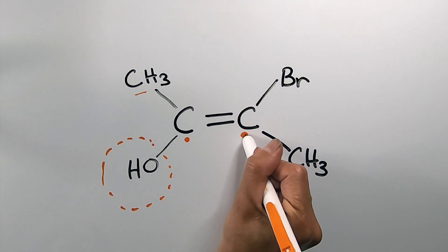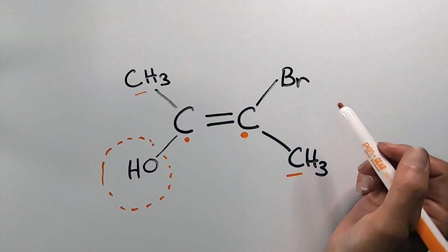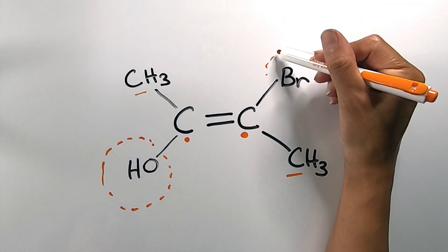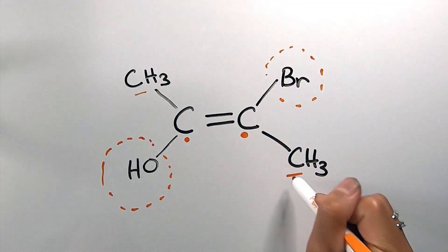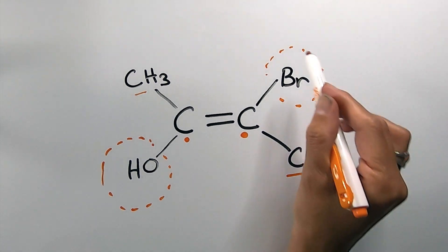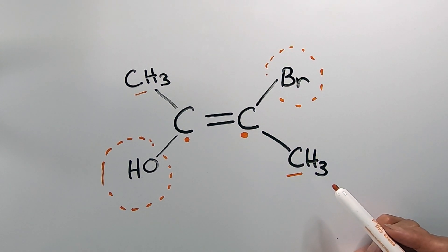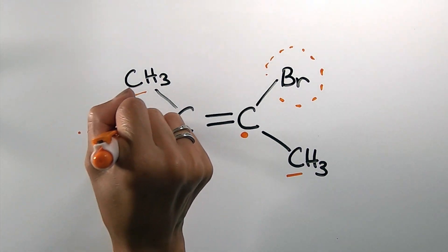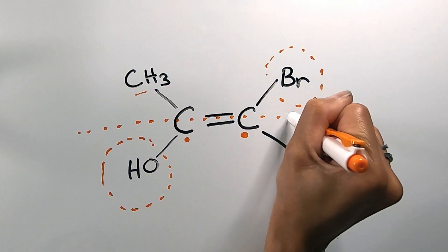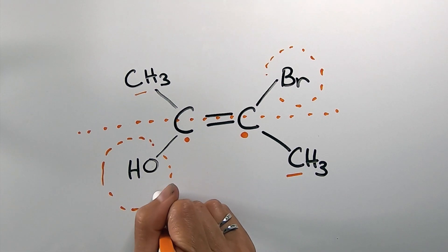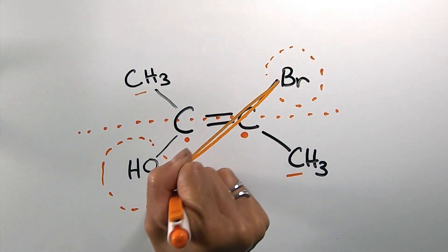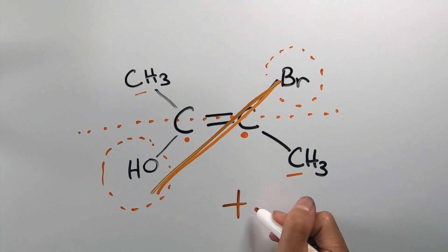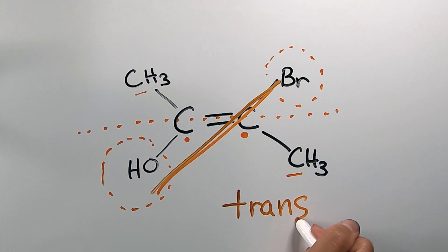Then I look at the second double-bonded carbon and determine priority among its substituents. Bromine has a greater atomic number than the carbon, which means it will have a greater electron cloud density, giving it priority. In the plane of the double bond, the two priority substituents are on opposite sides of the double bond, which makes this geometric isomer a trans geometric isomer.